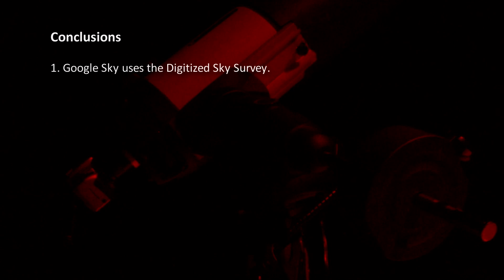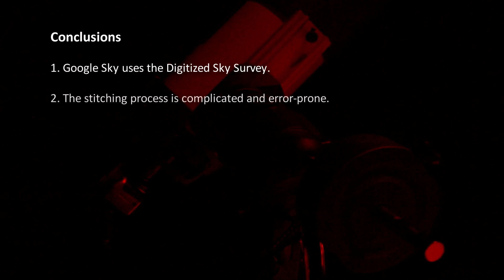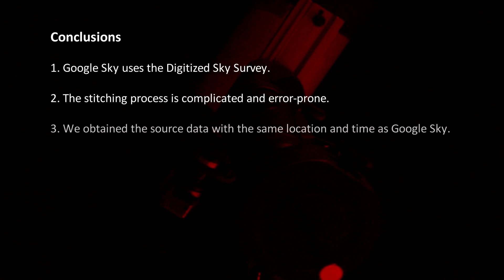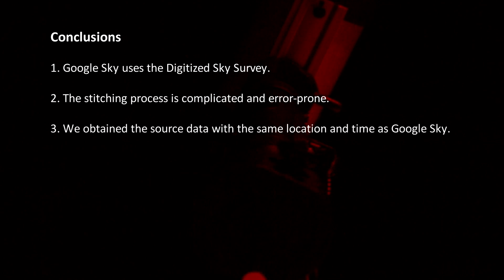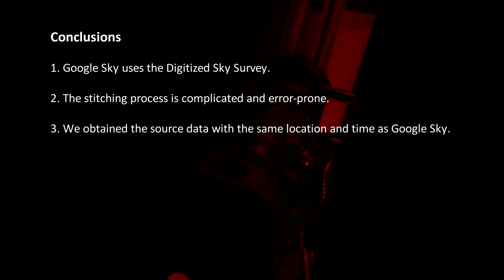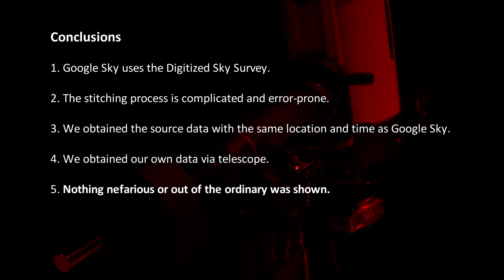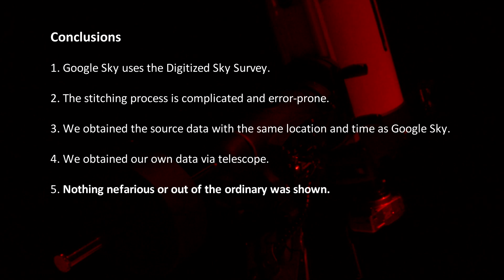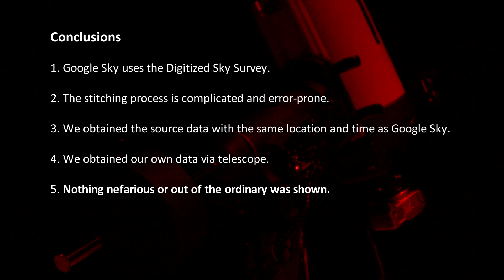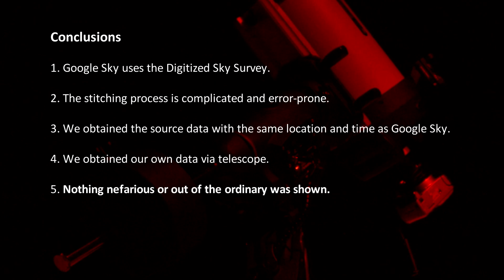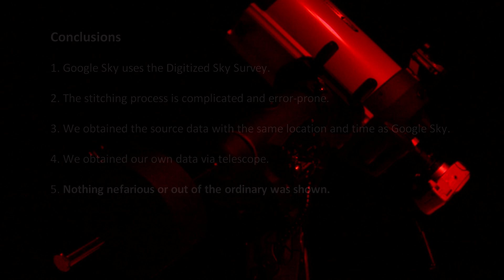To recap: Google Sky uses the Digitized Sky Survey for their data source. We know the stitching process is complicated and error-prone. We independently obtained the source data with the same location and time as Google Sky. We then obtained our own data via telescope. In all cases, nothing nefarious or out of the ordinary was shown. The Google Sky blank spot is a glitch in the software, not a cover-up or conspiracy to hide Nibiru or the truth. Be sure to try the methods outlined in this video yourself — you can apply these techniques to any blank spot in Google Sky.